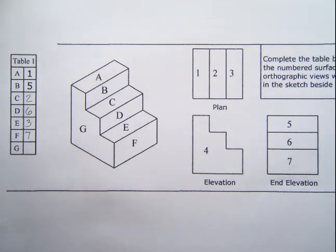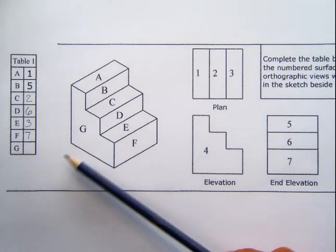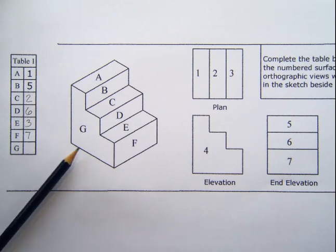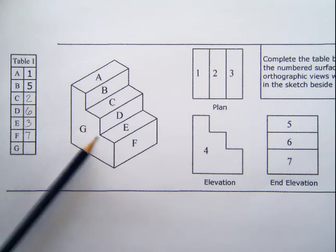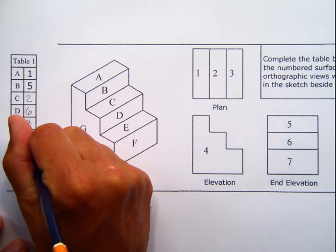And then lastly, G, looking from here this time, so totally different, you can almost tell by the shape of this one which number it's going to be. So looking on here, which is the front elevation, which is this view here, it only has one surface, so it is number four.